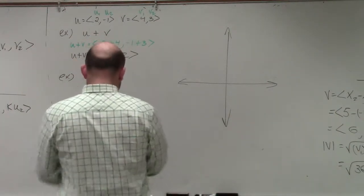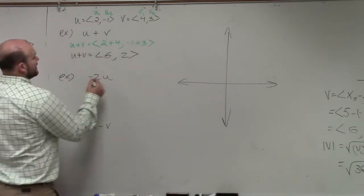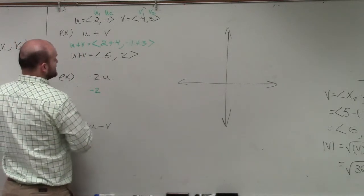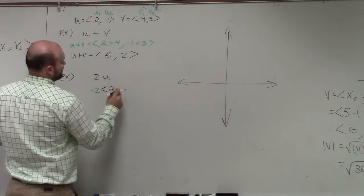So the next one we'll do is we'll do negative 2u. So again, just like I did before, we'll plug in a negative 2 outside of my vector u, which is 2 comma negative 1.